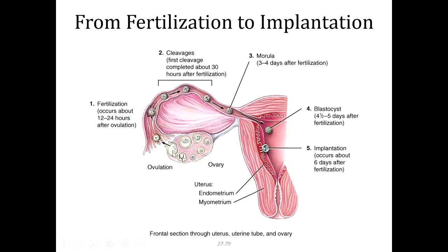After ovulation, the egg develops inside the follicle and then bursts forth. Fertilization can occur in the uterine tube around 12 to 24 hours after ovulation. The sperm would have had to make its way up through the cervix, through the uterus, and then up into the uterine tube to reach that oocyte. That's where meiosis II would occur and fertilization would take place.